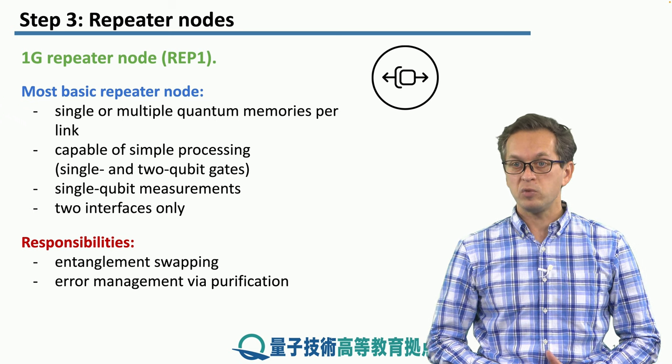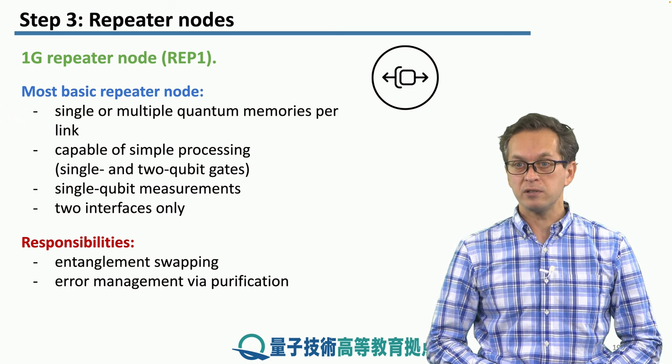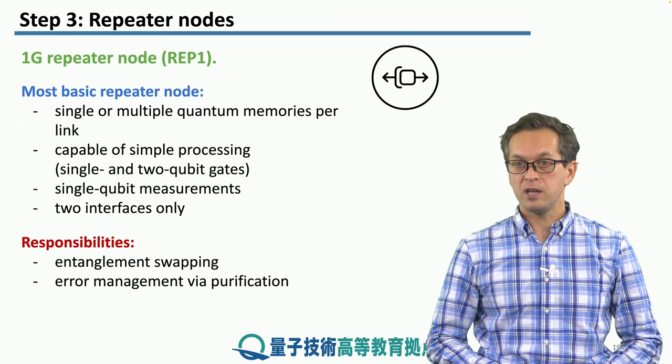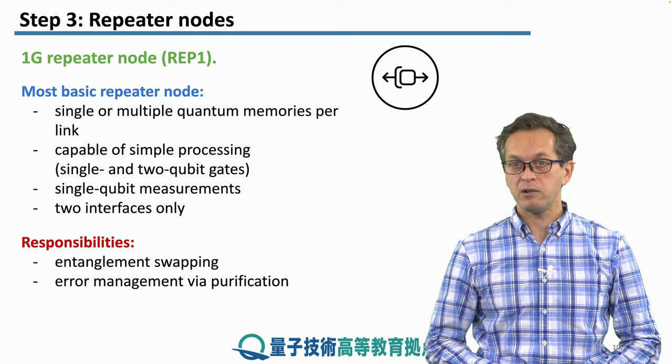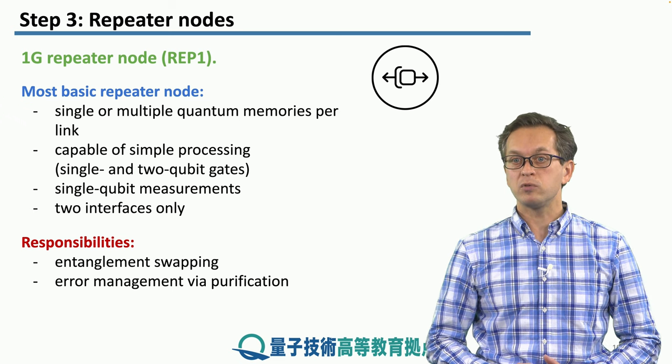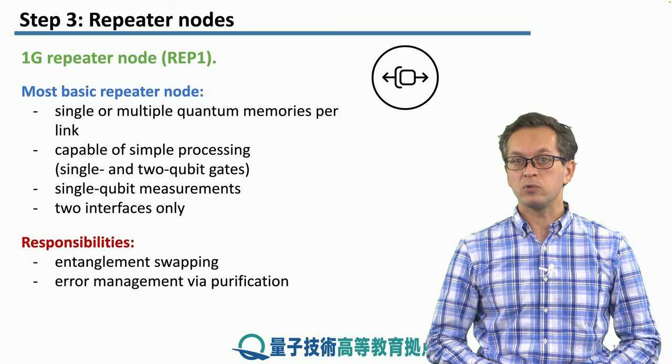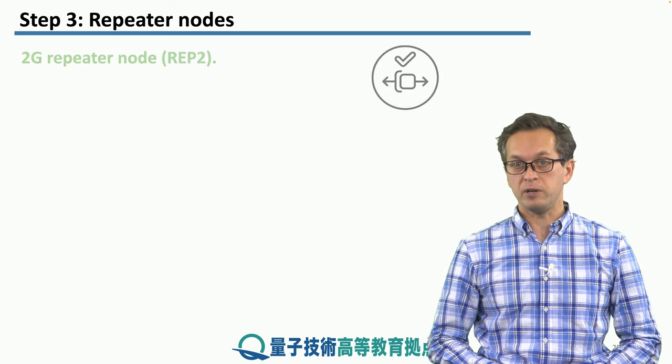It also needs to take part in error management via purification. To remind you, purification can only detect errors — it cannot correct them. If you want to correct errors, we have to move up to the 2G repeater node.